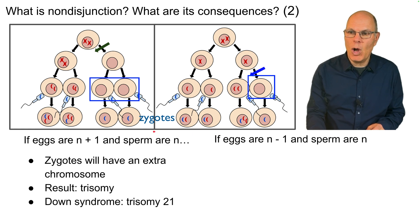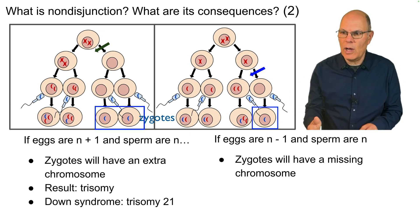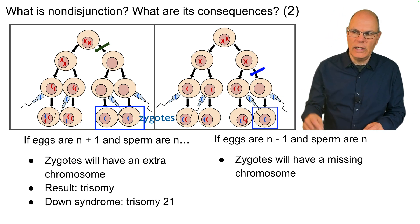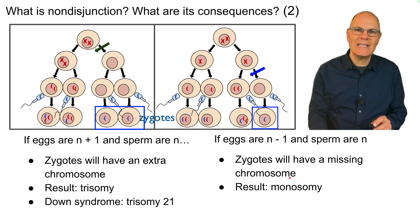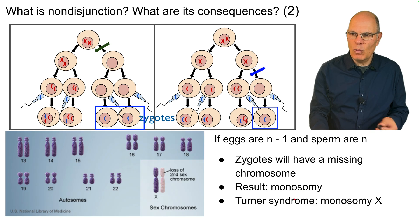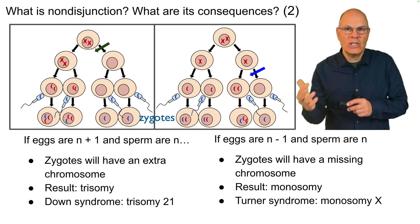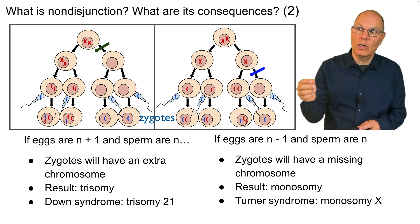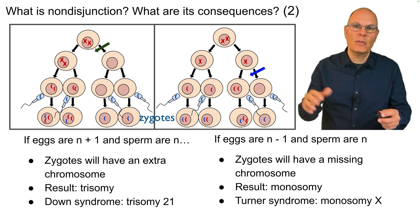If the eggs are N minus one and the sperm carry a normal number of chromosomes, the zygotes will have a missing chromosome — all the homologous pairs, but one will be short. The result is a monosomy, and most of those aren't survivable except in the case of the sex chromosomes. One to know is Turner syndrome, where instead of females having two X chromosomes, they have one. There can also be men born with an extra X chromosome, or with an X and two Y chromosomes. These are all chromosomal variations that come about through nondisjunction followed by fertilization.